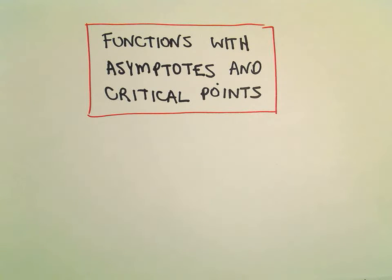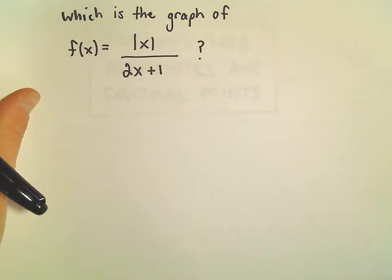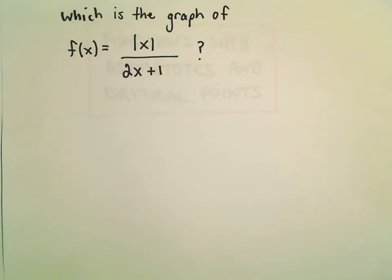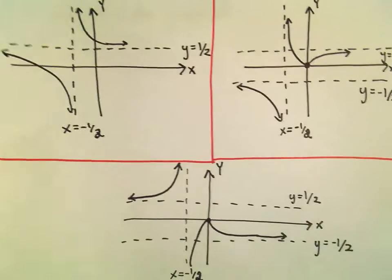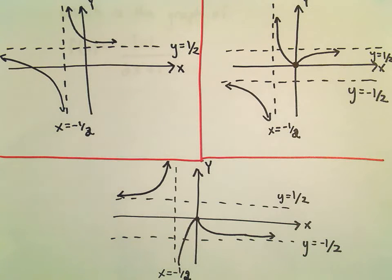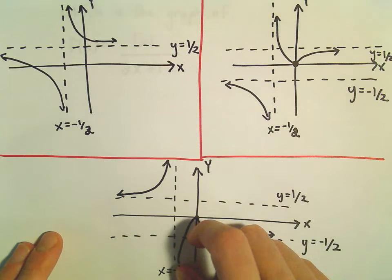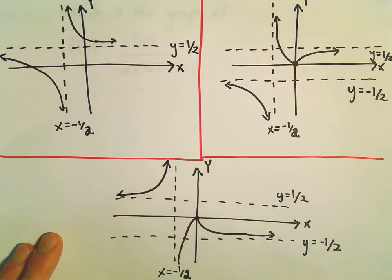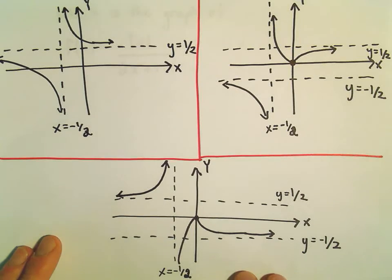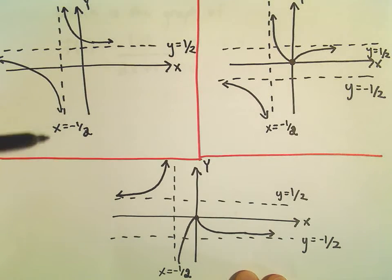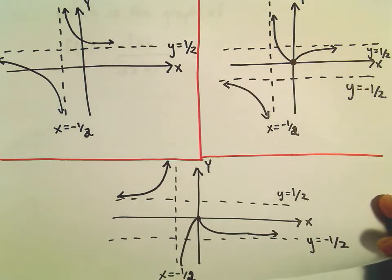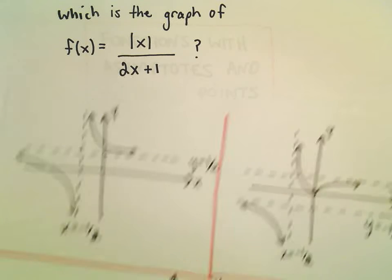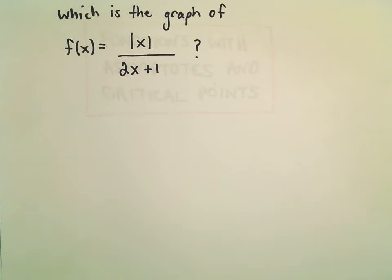In this example we're going to have a function and we're just going to try to match up a graph with the formula. We want to figure out which graph goes with the absolute value of x over 2x plus 1. We've got three different graphs. The first one has a single horizontal asymptote at 1 half. The second and third both have asymptotes at negative 1 half and positive 1 half. They all have vertical asymptotes at negative 1 half. We could certainly do this without any calculus, but we'll look at some calculus ideas as well.